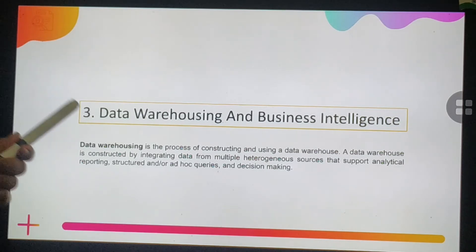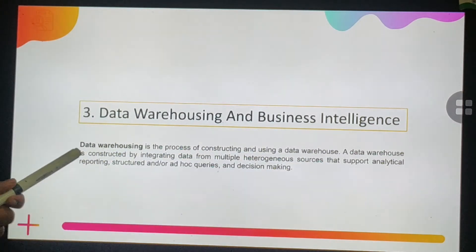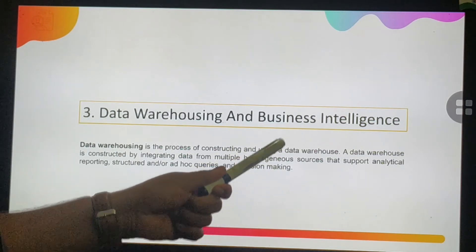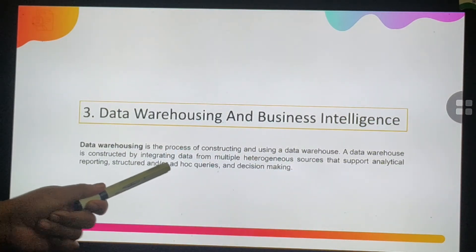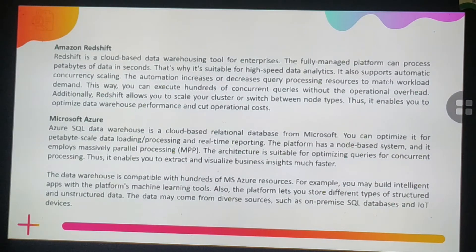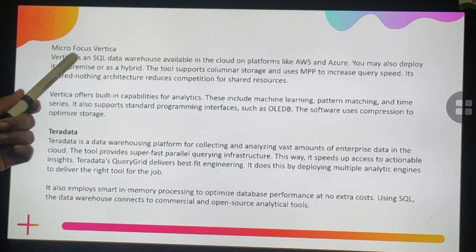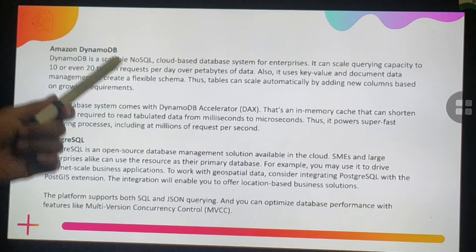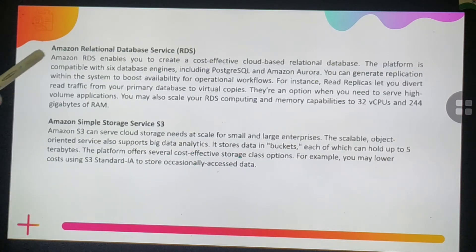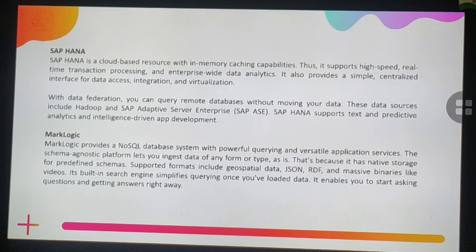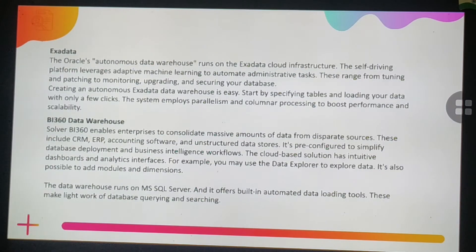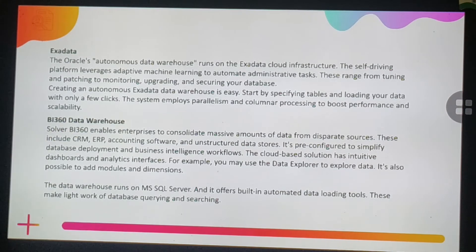The third technology area is data warehousing and business intelligence. Data warehousing is the process of constructing and using a data warehouse — a system built by integrating data from multiple heterogeneous sources that supports analytical reporting, structured or ad-hoc queries, and decision making. Data warehousing tools include Amazon Redshift, Microsoft Azure, Google BigQuery, Snowflake, Teradata, Amazon DynamoDB, PostgreSQL, Amazon RDS, Amazon S3, SAP HANA, MarkLogic, MariaDB, DB2 Warehouse, Exadata, BI360, and Cloudera.